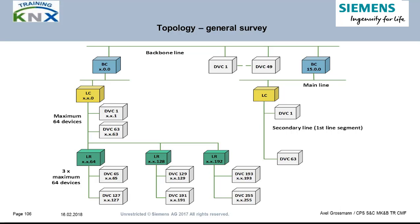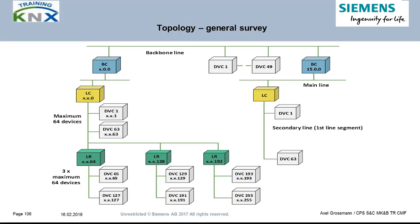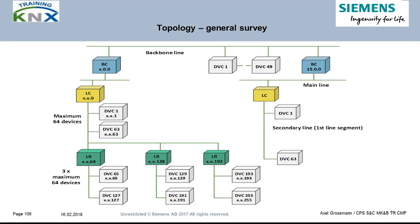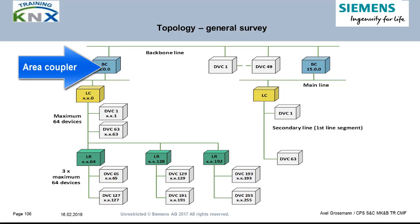This graphic shows a minimalistic general overview of the pure twisted pair structure, including all possible hierarchy levels. Without specific requirements, you always start with line 1.1 in ETS and assign the bus devices to the first segment of this line. In each line, a line coupler can be inserted — here yellow marked — to link up this line via the next higher level to other equally designed lines.